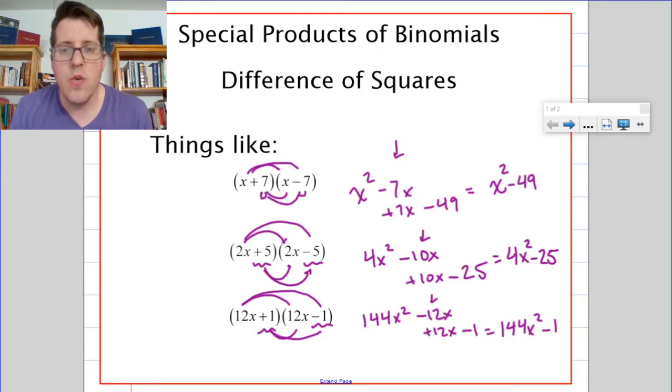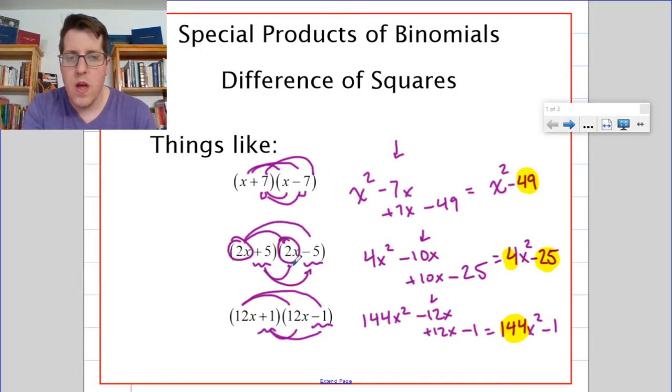I want you to pause the video and try and figure out in those three final answers what the special thing that's going on is. What I hope you notice is that every time you see a number, that 49, that 4, that 25, that 144, it is a perfect square. So the 49 came from the 7 times 7. The 4 came from the 2 times 2. That's why all of those are perfect squares. Remember that 1 is also a perfect square. That's 1 times 1.